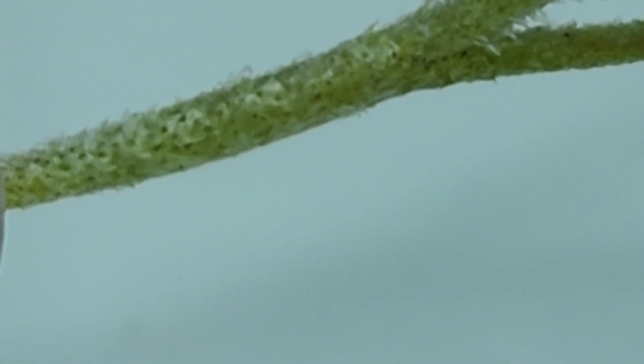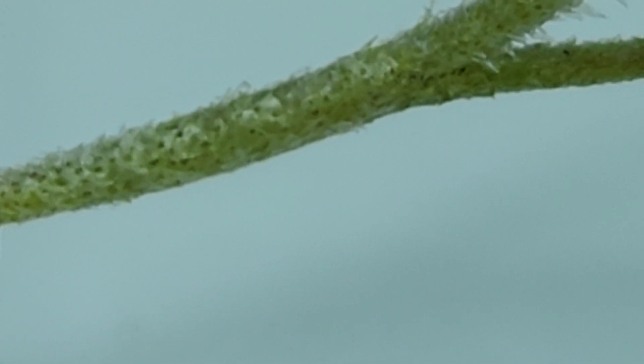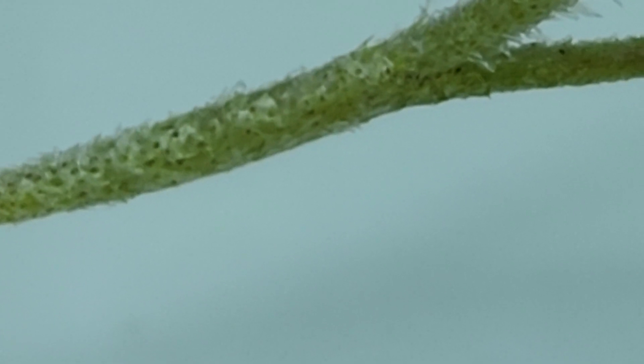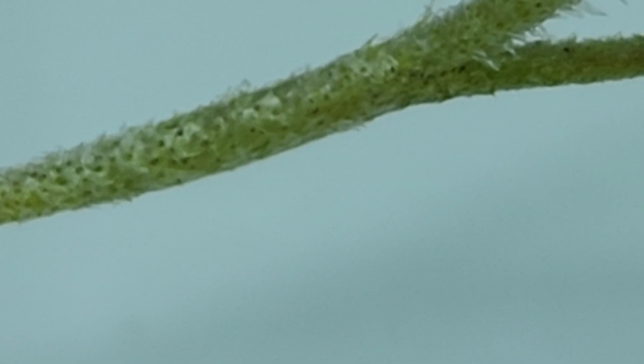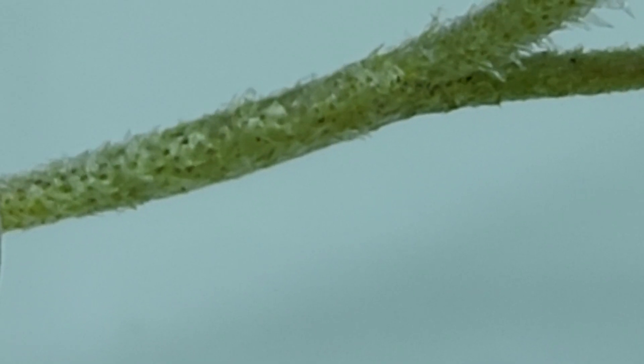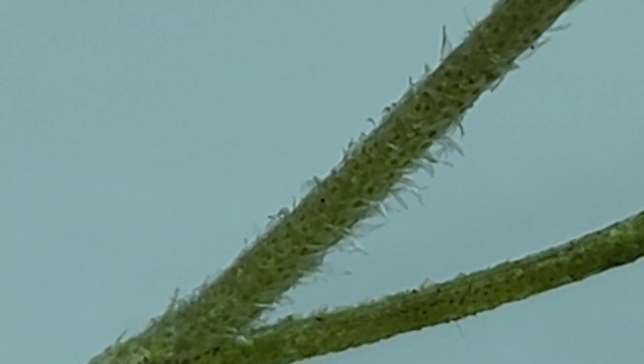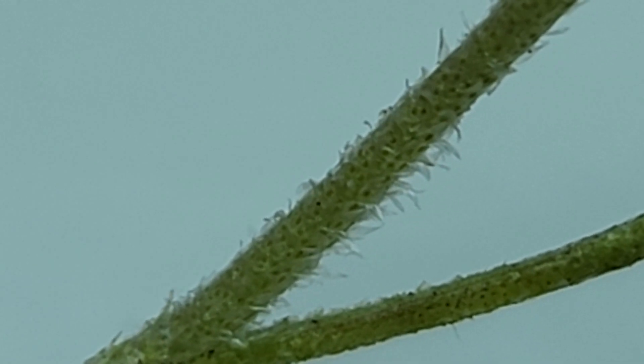What the trichomes do is they help the plant collect water, so kind of like a net or a screen that collects mists and water that allow the plant to absorb it.